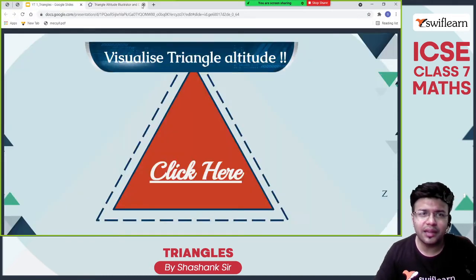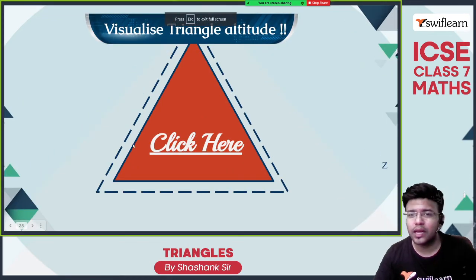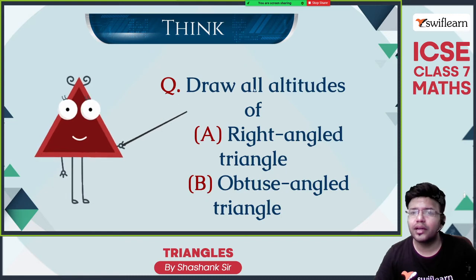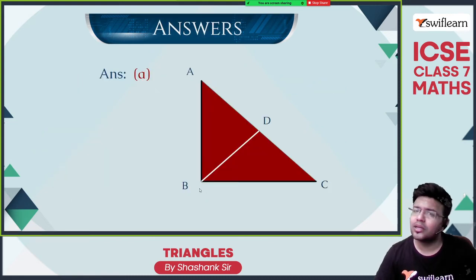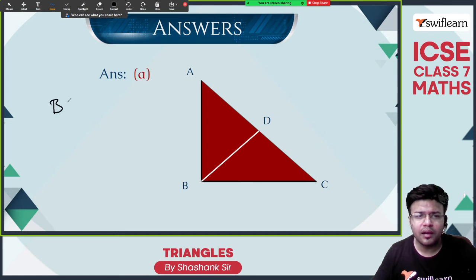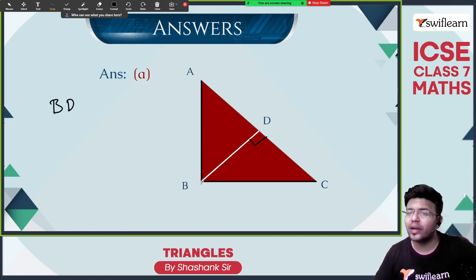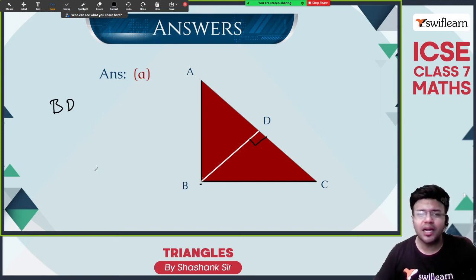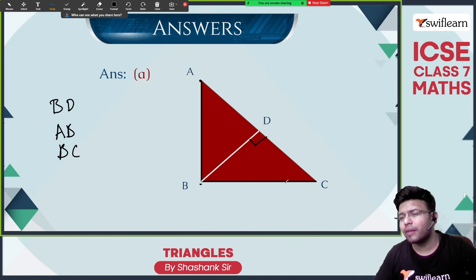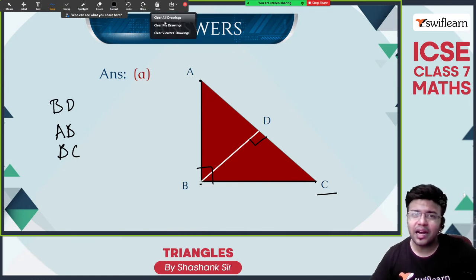How many altitudes can a triangle have? A triangle can have 3 altitudes as well. Draw all the altitudes of a right angle triangle. This is a right angle triangle — we have 3 altitudes. BD is the altitude: BD is perpendicular to AC and it is joining vertex B. AB is the altitude: AB is perpendicular to BC and it is touching vertex A. Same with BC: BC is perpendicular to AB and it is drawn from vertex C. These 3 are the altitudes.